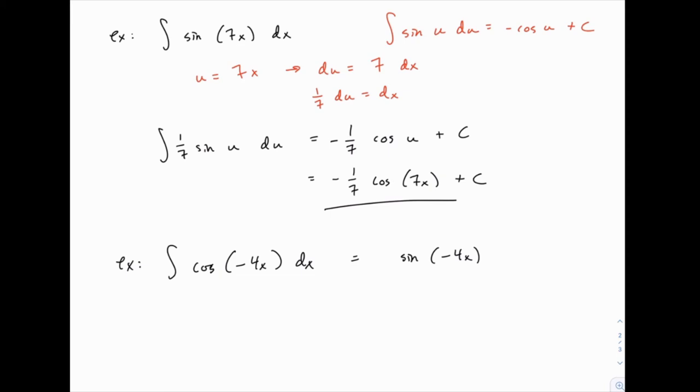Just like on the first one, we integrated the sine function and got the cosine function with a negative, and then we divided by seven, and we got the final answer.